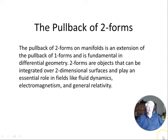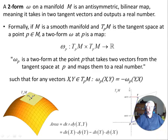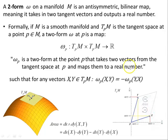So let's make a start. Let's go back a little bit to the beginning, just to remind ourselves what a two-form is. A two-form omega on a manifold M is an anti-symmetric bilinear map, meaning it takes two tangent vectors and outputs a real number. Formally, you'd write it as follows.